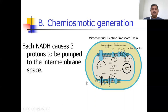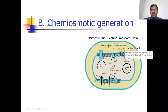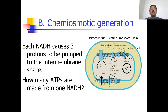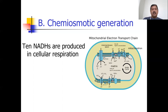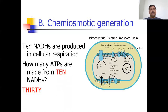Each NADH causes three protons to be pumped to the inner membrane. So if three protons go through and there's one ATP per proton, that results in three ATPs for each NADH. Remember, NADH is a high-energy electron acceptor. There are 10 NADHs in cellular respiration, so 10 times 3 gives us 30 ATPs — much more efficient than substrate level phosphorylation.